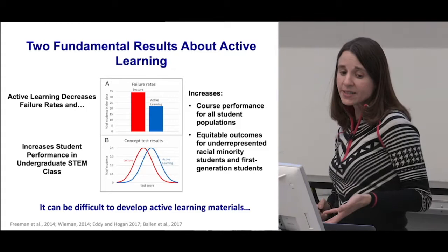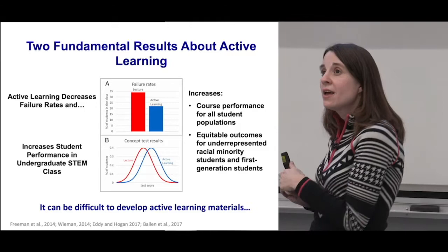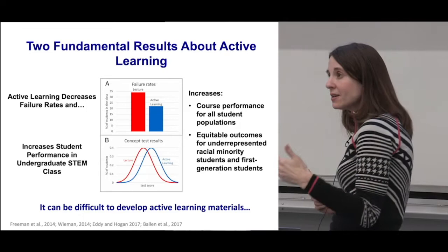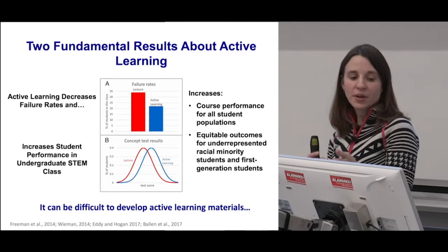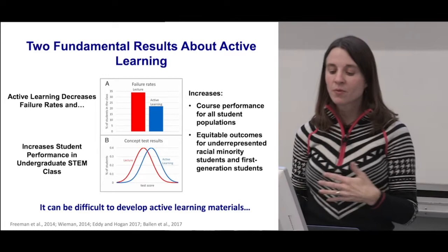The first is that active learning decreases failure rates. The graph shows the red is lecture, the blue is active learning, representing the percentage of students failing — you can see fewer students failing when using active learning. It also increases student performance in undergraduate STEM classes. Students either took a common conceptual assessment available nationally or had common exam questions drawn from a large pool, and students in active learning classrooms performed better than students in traditional lecture classes.